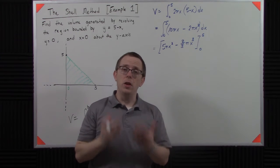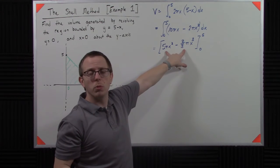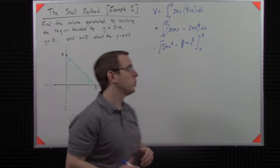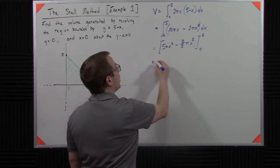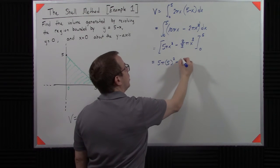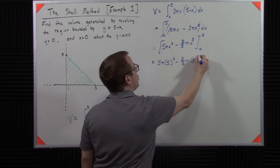But the other thing you want to recognize is that when x is 0, this whole term disappears. So we only really need to evaluate at the top limit here. So I'm going to plug 5 in. So I get 5 pi times 5 squared minus 2 thirds pi times 5 cubed.